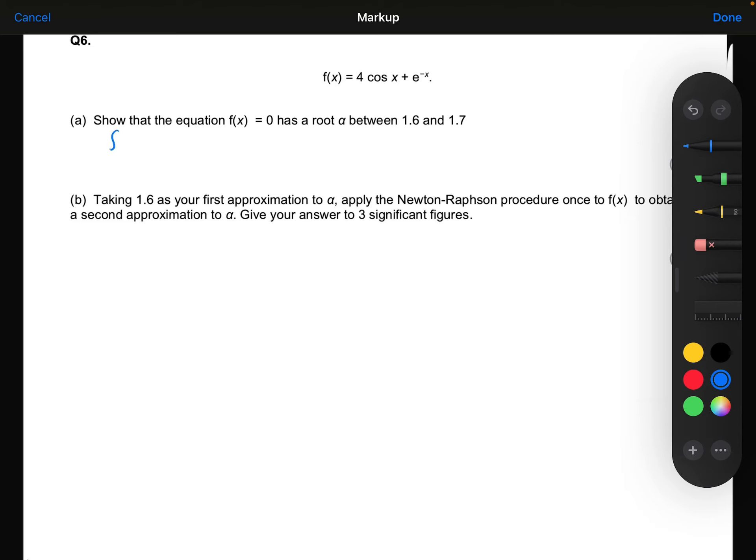We're going to substitute 1.6 into the function. We'll get 4 cos 1.6 plus e to the minus 1.6, making sure your calculator is in radians, not degrees. That gives 0.08, a positive answer.